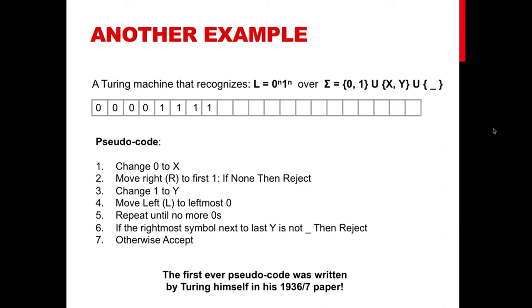So the intuitive idea to construct a machine that accepts these words with the same number of zeros and ones is to replace the first zero with a marker, then move to the next one and mark it with another symbol. Then we repeat the process until no more zeros. At the end, if for every new symbol for zero, there's another symbol matching every new marker for the zero, then there's another matching for the one, then the word is accepted. And if not, then it's rejected.